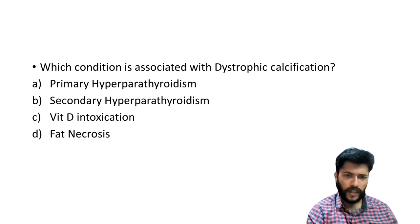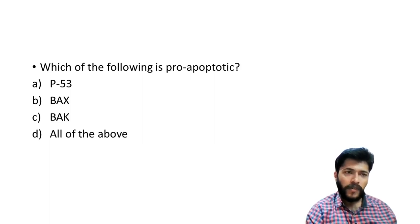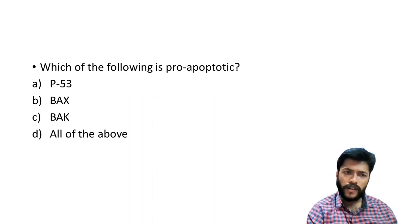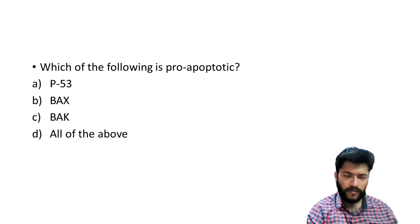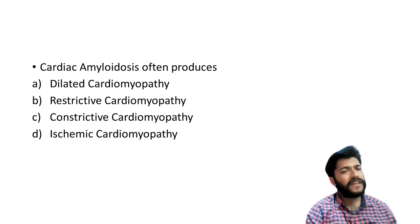Which of the following is pro-apoptotic? As mentioned, BAX and BAK are pro-apoptotic. P53 is a tumor suppressor gene — it will promote apoptosis. So all three — BAX, BAK, and P53 — are pro-apoptotic. The answer is all of the above. Whereas BCL-2, MCL-1, and BCL-XL are anti-apoptotic genes.